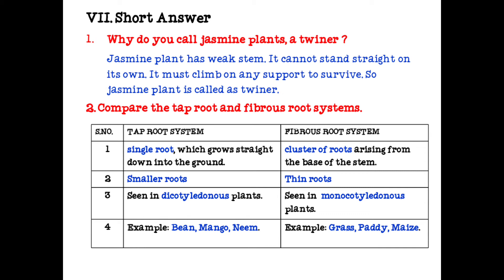Compare tap root and fibrous root system. For compare/distinguish questions, draw a tabular column. Tap root system: a single root which grows straight down into the ground, with smaller lateral roots, seen in dicotyledonous plants. Fibrous root system: a cluster of roots arising from the base of the stem, with thin roots, seen in monocotyledonous plants.